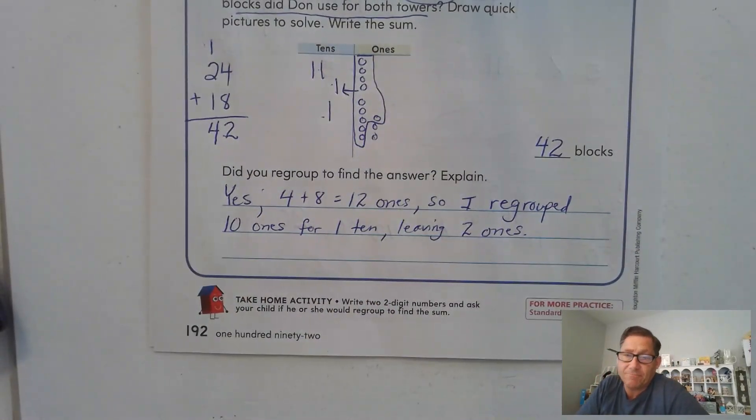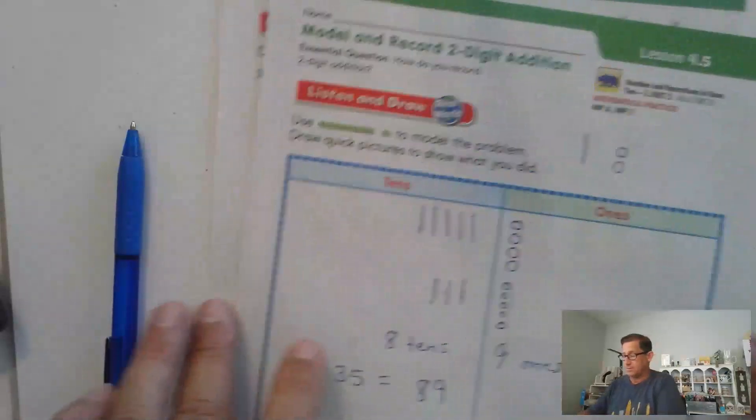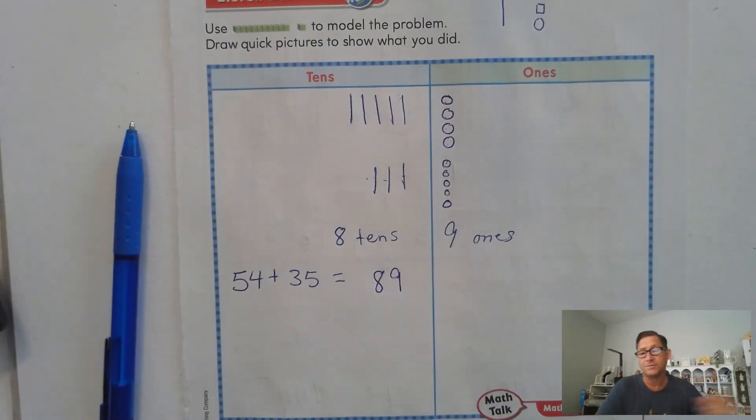Yeah, 4 plus 8 was 12 ones, so we regrouped 10 ones for a 10, and that left us 2 ones. All right, so that's it for modeling two-digit additions. So until our next lesson, I'll see you soon.